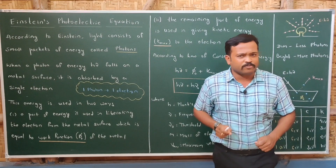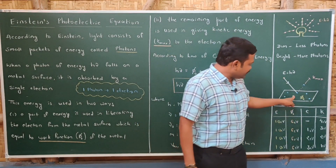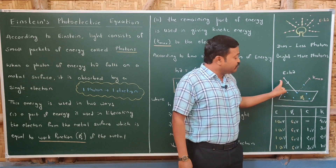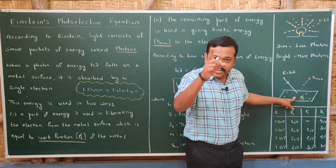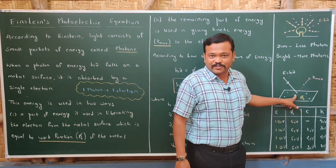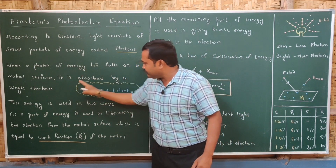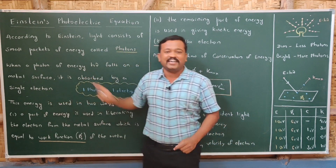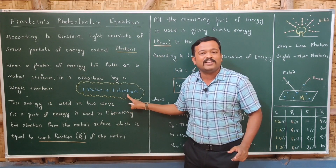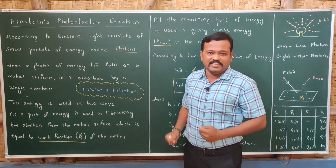Now let us see what happens when light of energy hν falls on a metal surface. This is a metal surface which consists of free electrons. When light of energy falls on this metal surface, the energy of a single photon is absorbed by a single electron. According to Einstein, when light of energy hν falls on a metal surface, it is absorbed by a single electron.